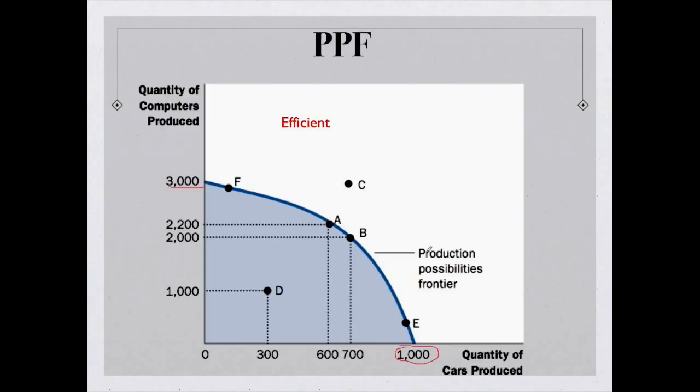In economics, we say any point along the line is efficient. So point F is efficient, point A, point B, and point E is efficient. That means the economy is making the most of its resources. They can't increase production of one good, say computers, point F here. They can't make more computers without making fewer cars, or say go from A to F.